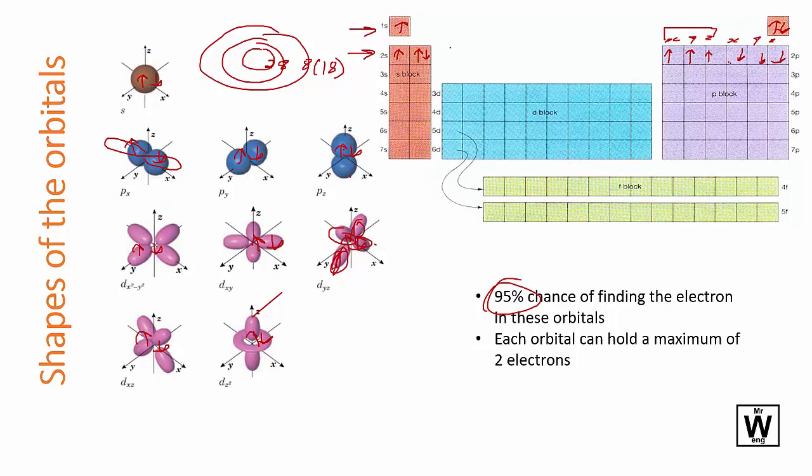And so the periodic table shows you that the s's are here, the d's are here, the f's are here, the p's are here.